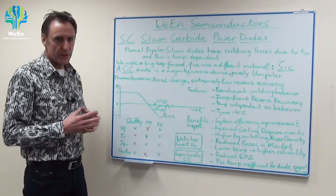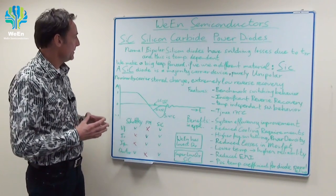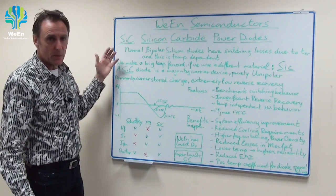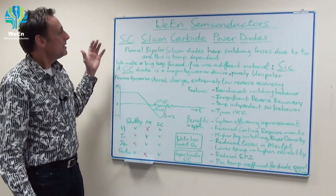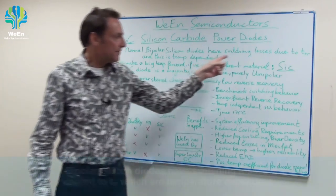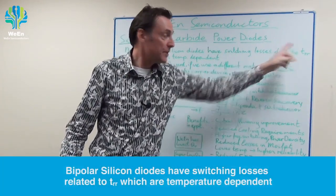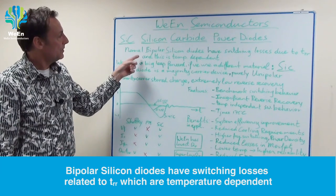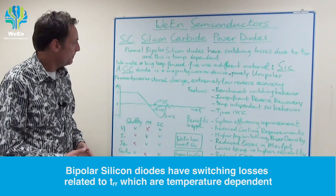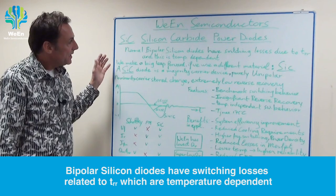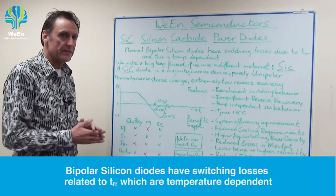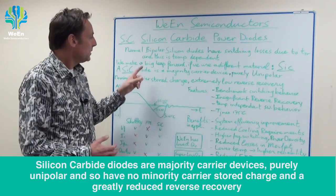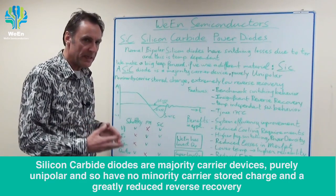Why would you use silicon carbide power diodes? Let's have a look first at bipolar power silicon diodes. These parts have switching losses due to TRR, and these switching losses are temperature dependent. If you use a different material — instead of silicon you would use silicon carbide — you can make a big leap forward in switching behavior.